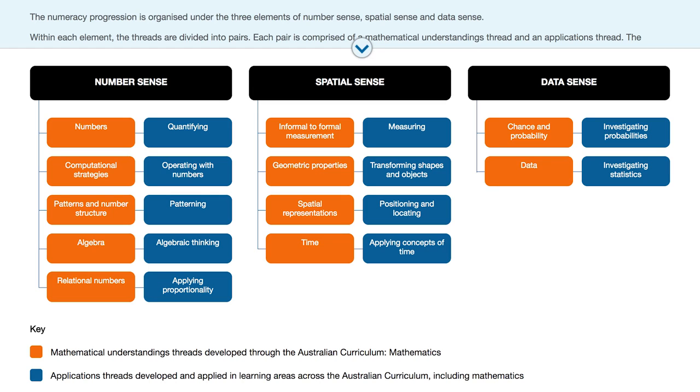Under the number sense element there are five pairs of threads. Under the spatial sense element there are four pairs of threads, and under the data sense element there are two pairs of threads. The number and names of the threads may be something you wish to comment on when you provide your feedback at the end of March.